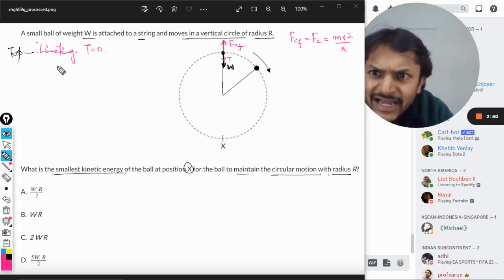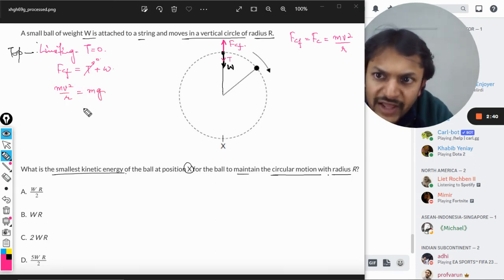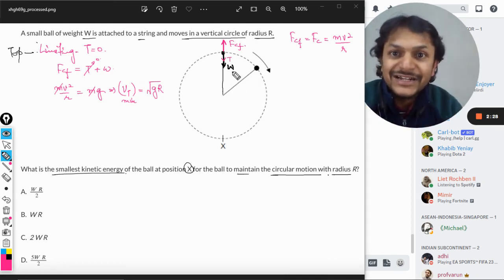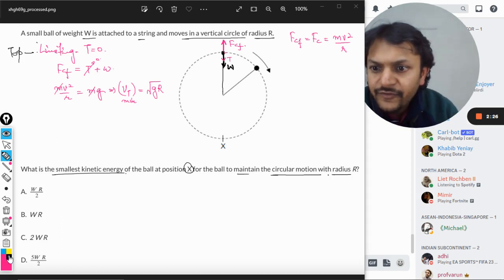Having said that, Fcf should be equal to T plus W for equilibrium. T is taken to be zero and we substitute the values. From here we get the top minimum velocity, because we are using the limiting condition, is root of gr. So this is the minimum velocity that it should maintain at the top position.